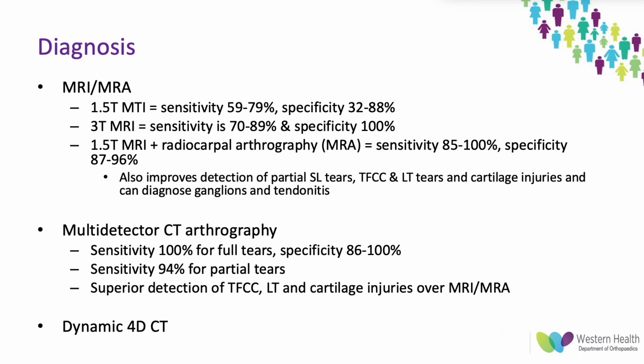MRI and MR arthrography can also be used for diagnosis. The sensitivity of MRI is directly proportional to scanner strength, so a 3 Tesla MRI is preferred where possible. Adding arthrography — a contrast injection into the radiocarpal joint — increases sensitivity approaching 100% and improves detection of partial tears. It also allows diagnosis of triangular fibrocartilage complex and lunotriquetral tears, as well as cartilage injuries that guide treatment.